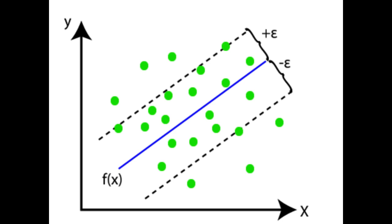Here, the blue line is called hyperplane and the other two lines are known as boundary lines.